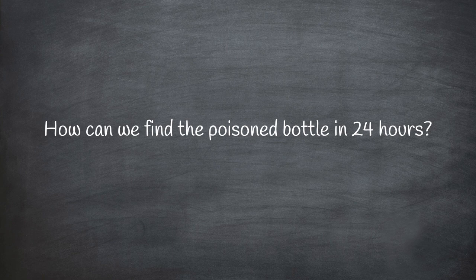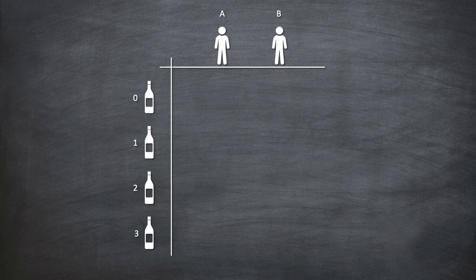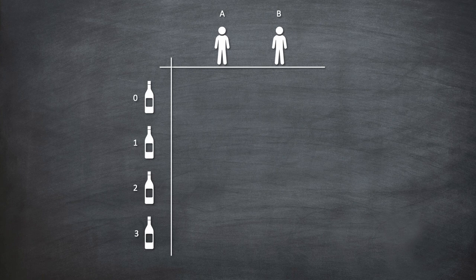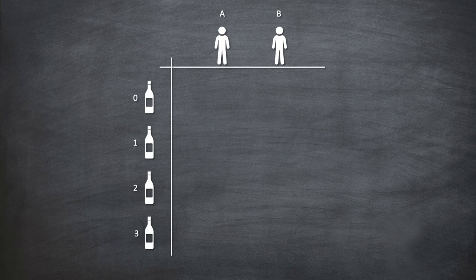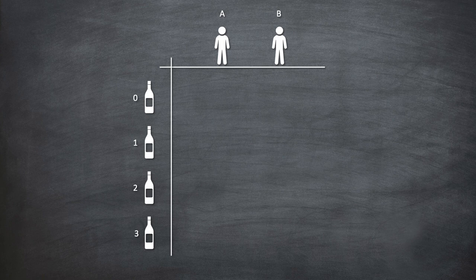Let's understand the solution. Take a simple example of four bottles with two prisoners. We have to arrange things in a way that no matter which bottle contains poison, we should be able to find out from the combination of prisoners who died after 24 hours. This can only happen if no two prisoners are given drink from the same combination of bottles. That is, we have to distribute bottles uniquely among prisoners.